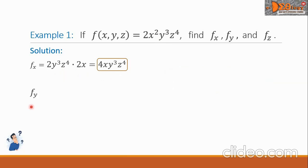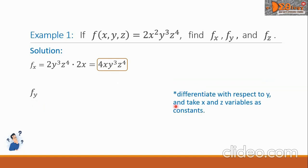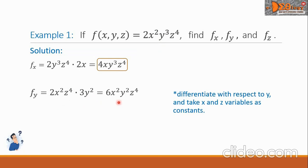Next is f sub y, the partial derivative of f with respect to y. We differentiate with respect to y, taking x and z as constants. The derivative is 2x squared z raised to 4 times the derivative of y cubed, which is 3y squared. Simplifying, f sub y equals 6x squared y squared z raised to the 4th power.